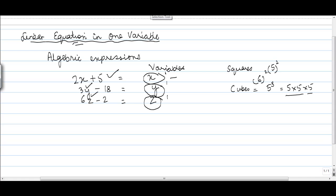Why? Because basically, the variable in this case is having the power of 1, unlike a square or a cube. Where the variable has a power of 1, we call it as a linear equation in one variable.